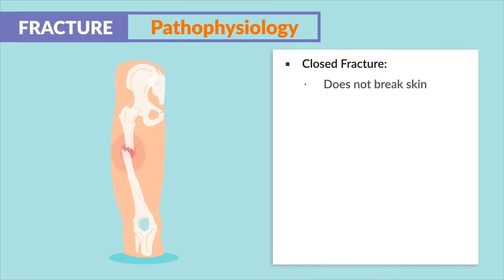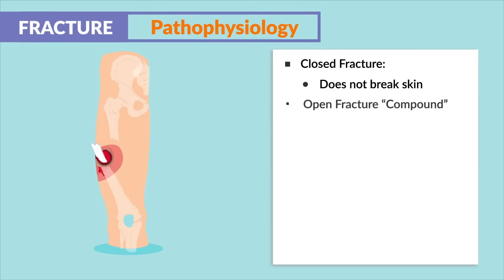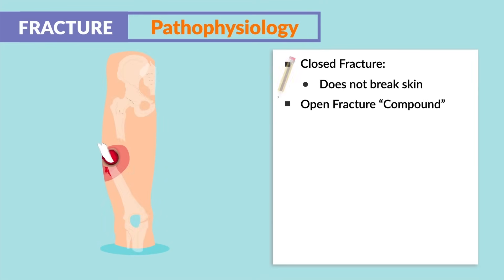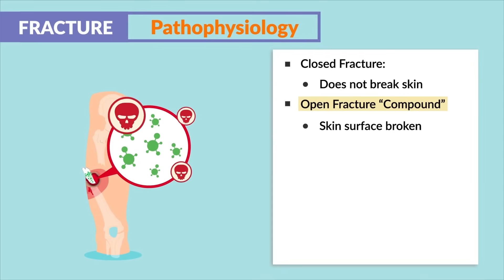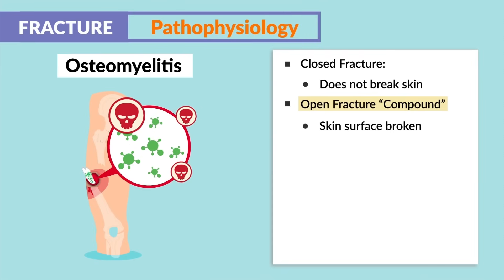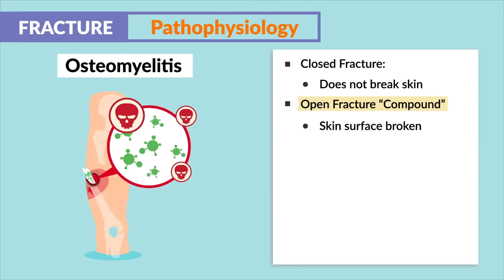For a closed fracture, this does not break the skin, so the skin is still intact. For an open fracture, also called a compound fracture, the skin surface is broken and bones protrude through, placing the client at high risk for infection like osteomyelitis — the bone infection, which we cover a little later in this video.